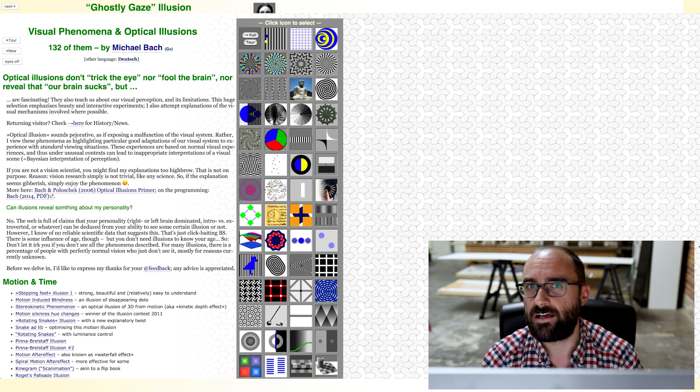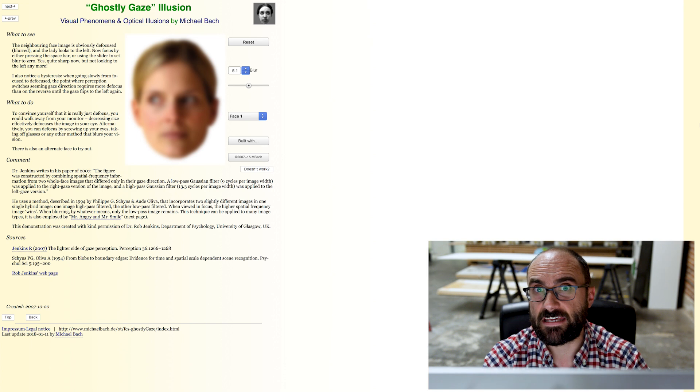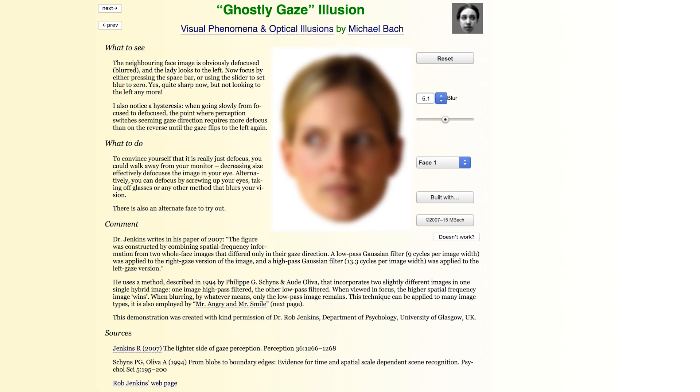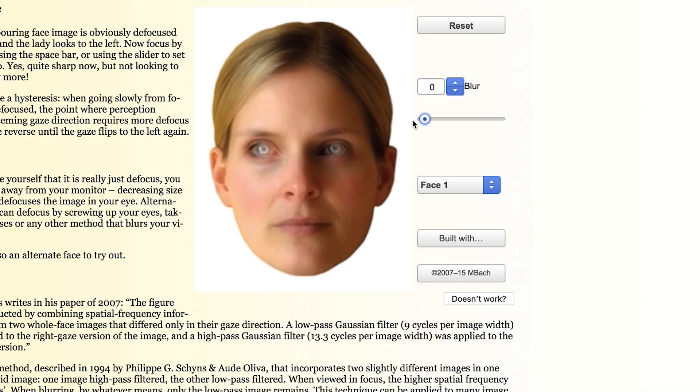I want to start today with the ghostly gaze illusion. Now take a look at this person's face. She appears quite clearly to be looking to the left, right? But now let's turn down the blur and see what she's really looking at. Ah! Us. Pretty spooky, right? If you blur the image, she appears to be looking to the left, but take away the blur, she's looking right at you. So what's going on here?